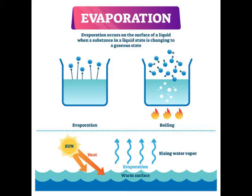Sa bandang ibaba ng illustration, makikita natin ang araw at tubig. Ipinapakita nito na dahil sa init na ipinibigay ng araw, ang tubig ay unti-unting umaakyat at nagiging water vapor or the gaseous phase of water. Sa bandang itaas naman ng illustration, ipinapakita nito na kapag pinapakuloan natin ang tubig, unti-unting umaakyat ang water vapor hanggang sa makikita na natin na unti-unti na rin nawawala o nababawasan ang tubig sa container.